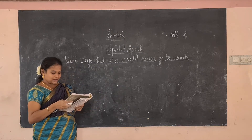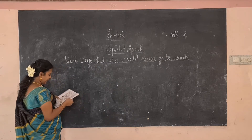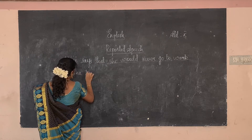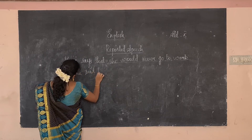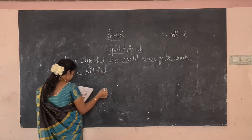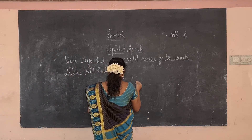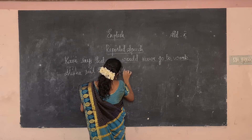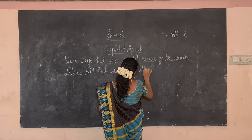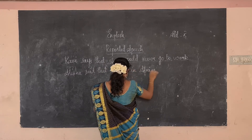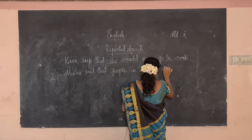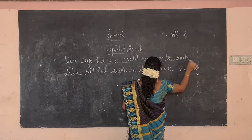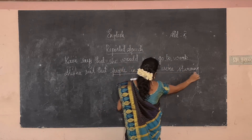Alicia said that people in Africa are starving. So how do we change it? We change 'are' into 'were': people in Africa were starving.